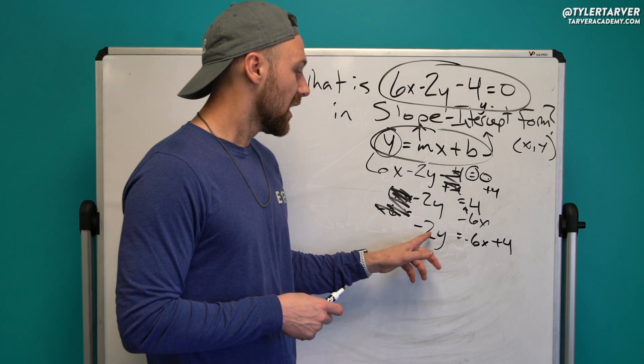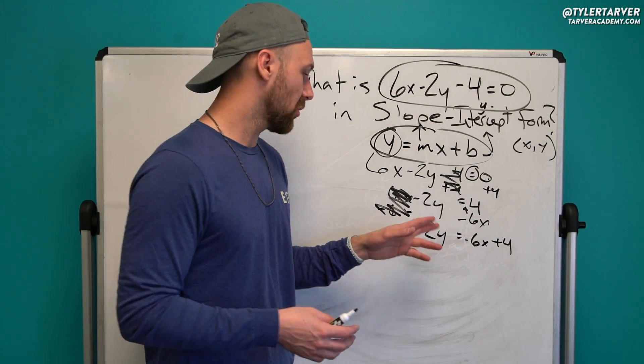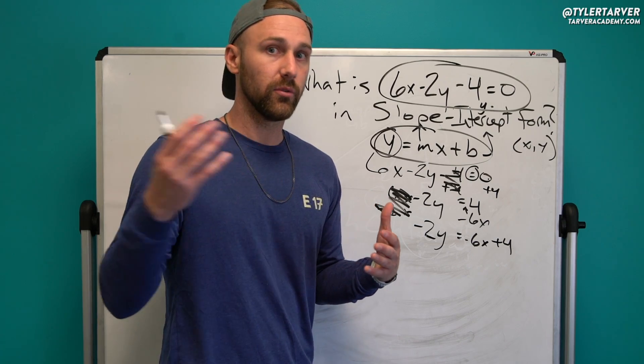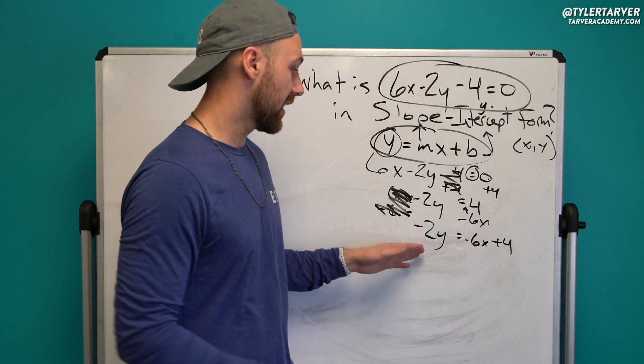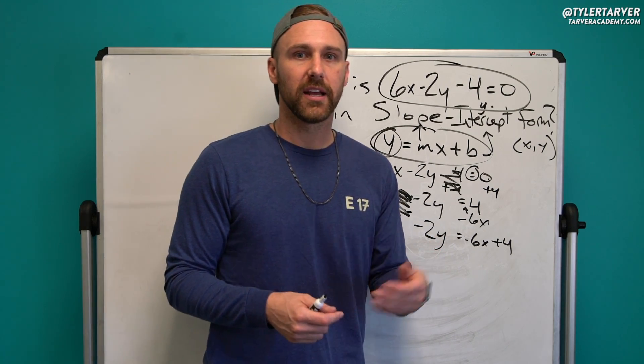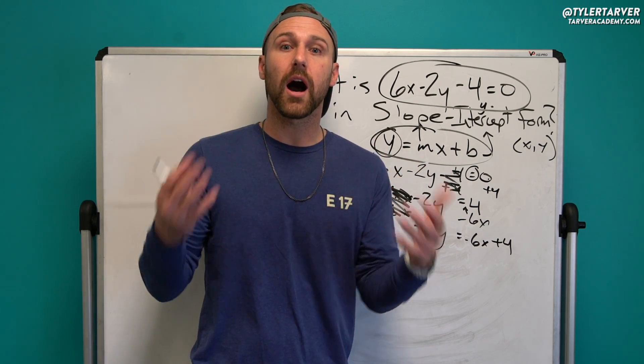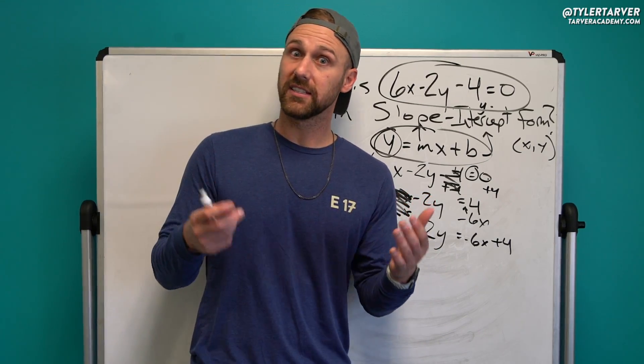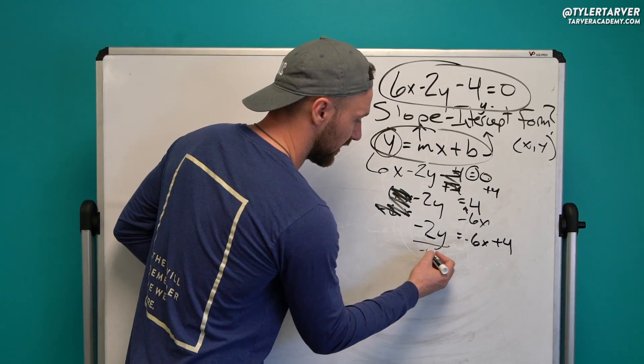You're looking at what's happening between the negative 2 and the y. It's not y minus 2, which would mean you would add 2 to the other side. It's negative 2 times y—you're multiplying them. And to go across the equals sign, you have to do the opposite. So the opposite of multiplying is dividing. So I'm going to have to divide by negative 2.